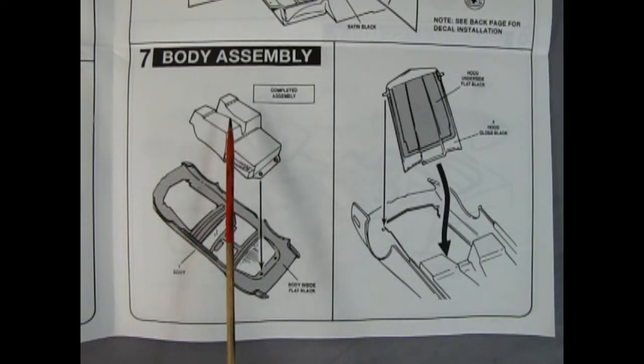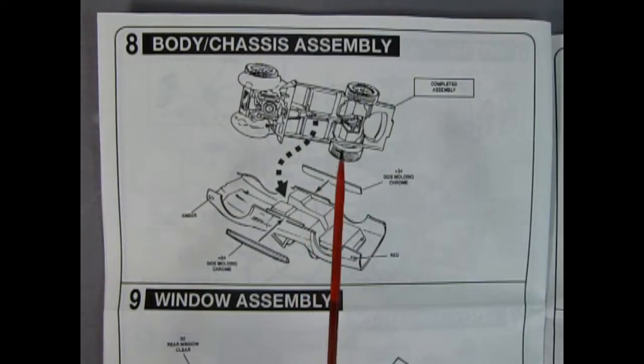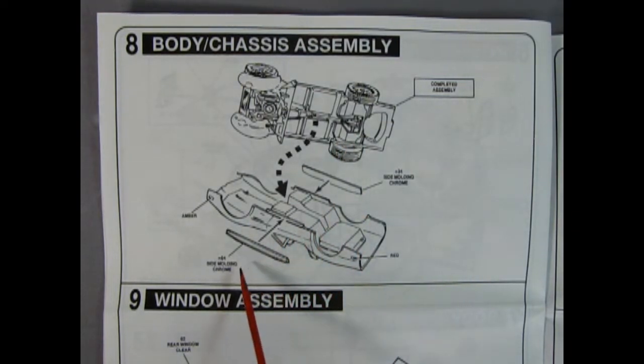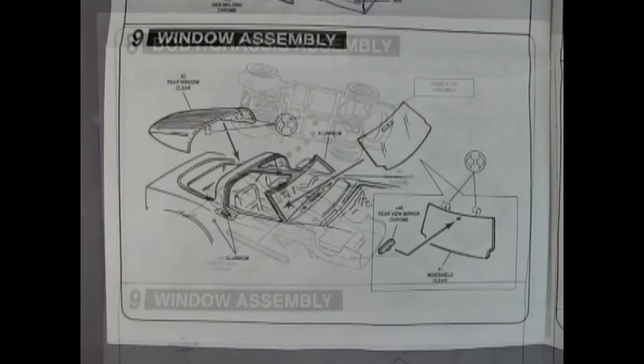Step seven is our body assembly and this is quite straightforward. The interior bucket tub that's all complete now drops into place inside our body, and then we have our underside hood as well which will just pop into place and those little pins fit into little grooves under the body. Assembly step eight shows our chassis complete - that just pops in onto our body from underneath, and then you add on these nice chrome side moldings. Step nine shows our window assembly being glued into place, and this is a little bit more unique than some of the other model cars because instead of gluing the glass from the bottom up you glue it from the top downward, which can be a little more tricky and complicated.